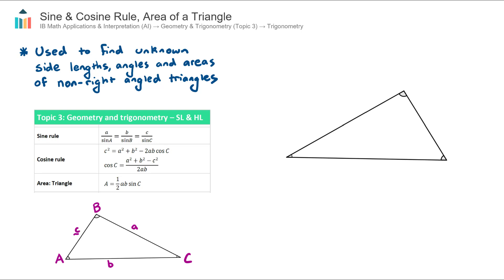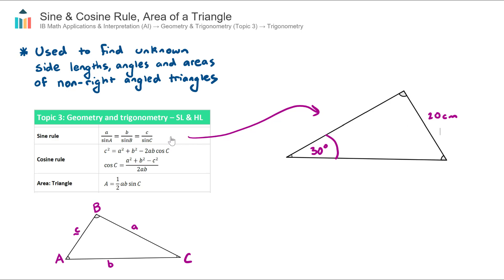Let's go through some examples. I'll talk through when to use the different rules in different situations, starting with the sine rule. We tend to use the sine rule when we have a pair of an angle and its opposite side given to us in the question. So for example if we were given a triangle with an angle of 30 degrees and the opposite side length of 20 centimeters and we want to find an unknown side length, having that pair is usually a good hint that we'll use the sine rule.